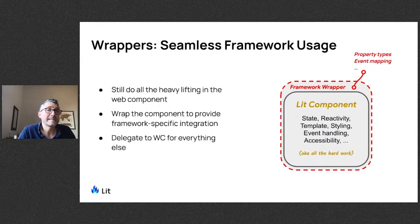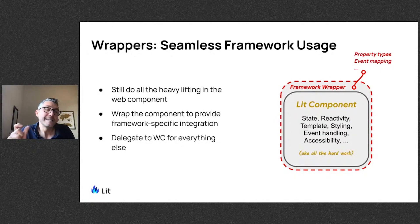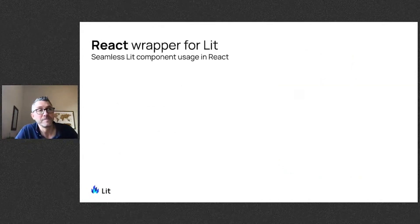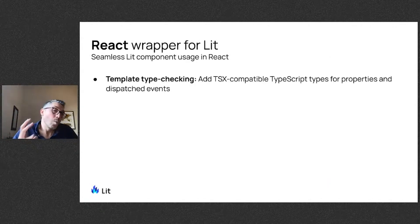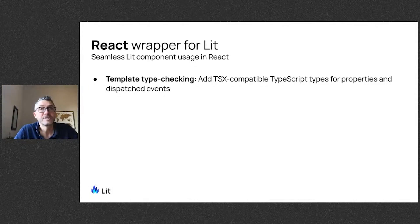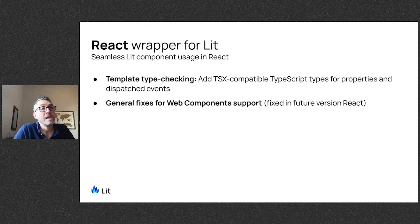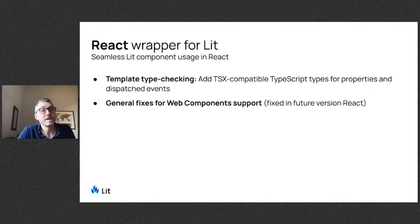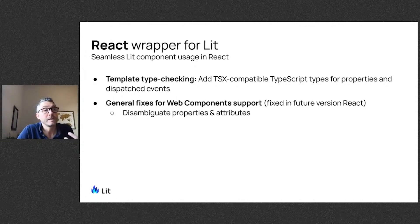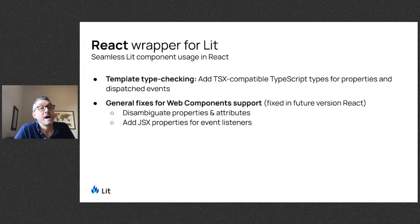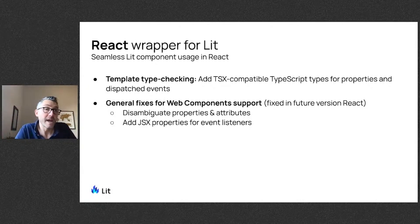Let's look at what types of things our wrapper adds. Web Components basically just work, so there are only a few things we have to do to make them look seamless to a framework user. In our React wrapper, the wrapper provides template type checking — it adds TSX-compatible TypeScript types for properties and dispatched events so that when you're writing in a TSX template, you get the full power of type checking. Since React has historically had issues with some DOM concepts, our wrapper can fix those up, providing disambiguation for properties and attributes so they're set correctly, and adding JSX properties for event listeners so you can pass event listeners in idiomatically.